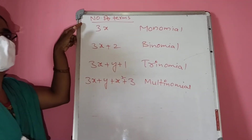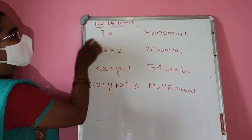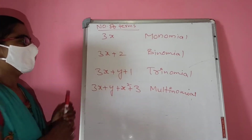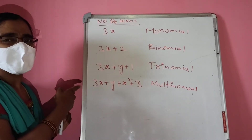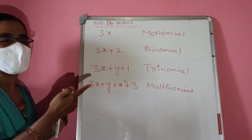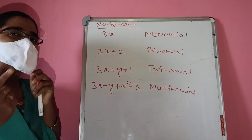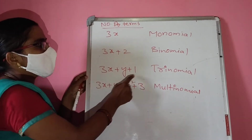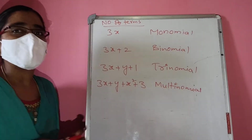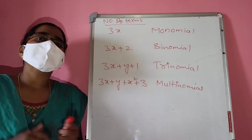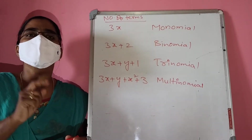By depending on the number of terms, we can also name polynomials. If the number of terms is 1, for example 3x, that is called a monomial. If the number of terms is 2, that is called a binomial. If terms are 3, it is a trinomial. If more than 3, that is called a multinomial. Note the difference between terms and degree: linear, quadratic, cubic depend on degree, while mono-, bi-, tri-, multinomial depend on number of terms.